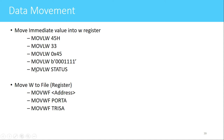The next instruction is MOVWF — move W to file register. Whenever we want to move the contents of the working register to any other register, we use this instruction. The syntax is MOVWF followed by an 8-bit address from memory. For example, MOVWF PORTA copies the data in the working register to the PORTA register. Similarly, MOVWF TRISA copies the working register contents to the TRISA register.